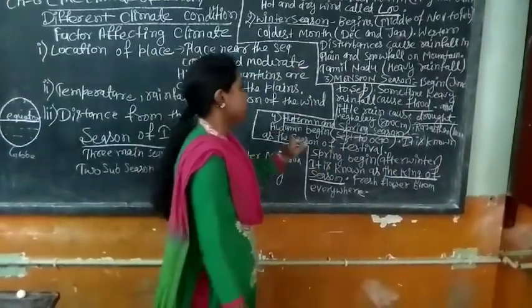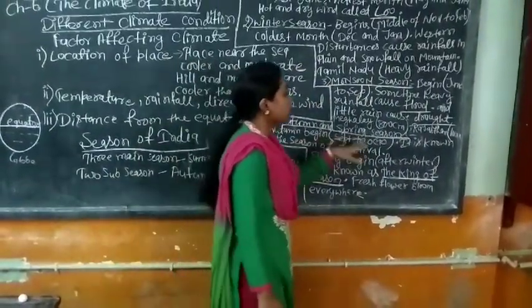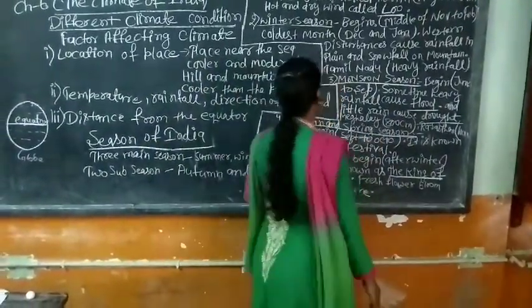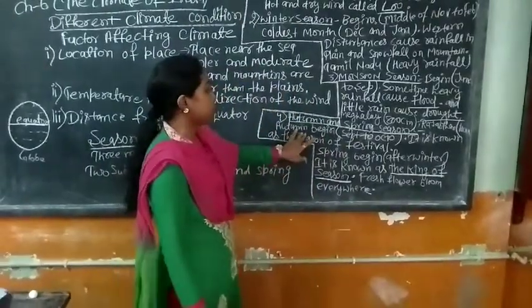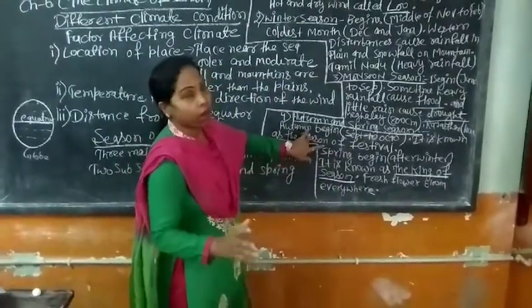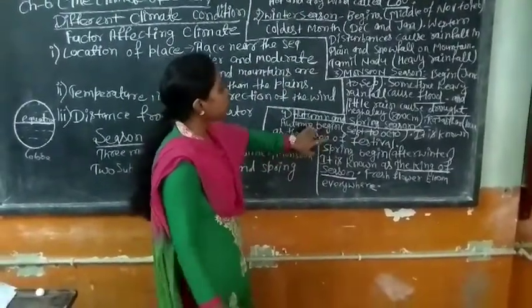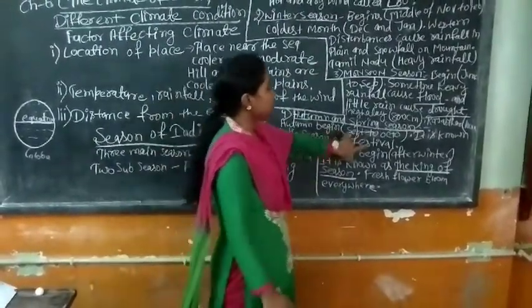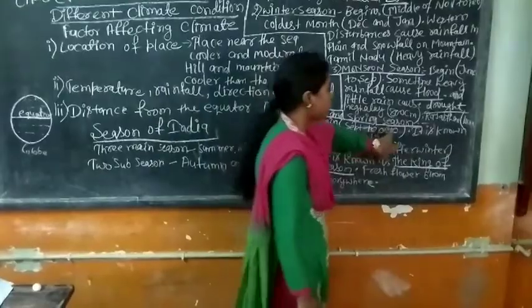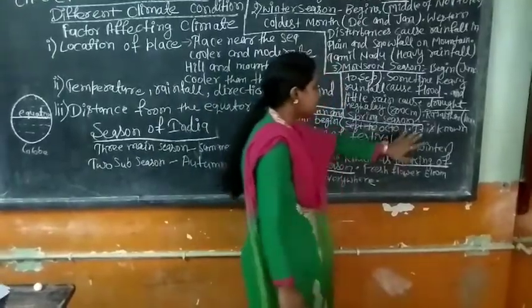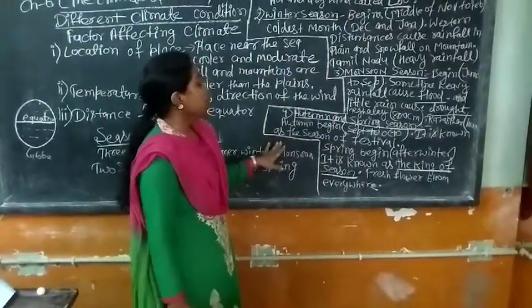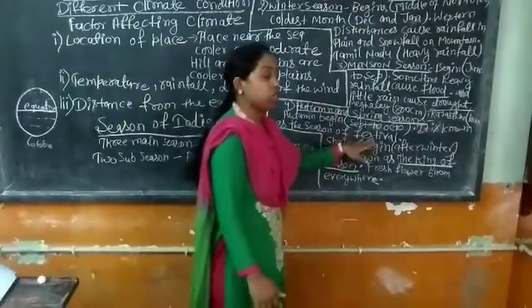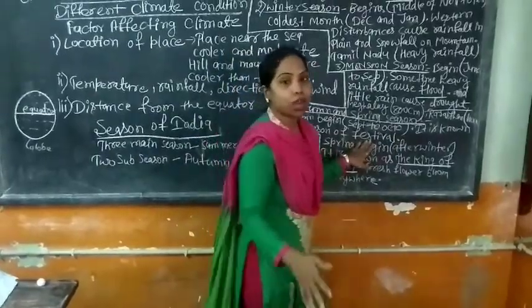Next, we have Autumn. Autumn is the same season. It starts in September and October. It is known as the season of festivals.